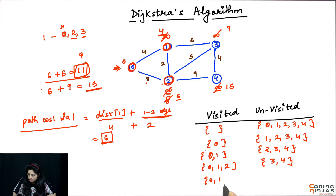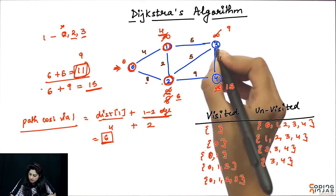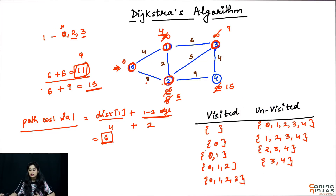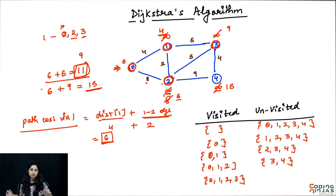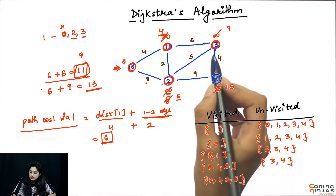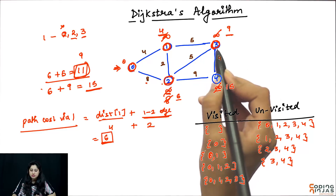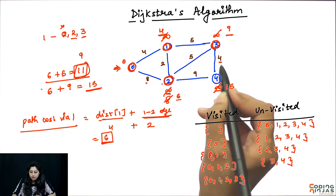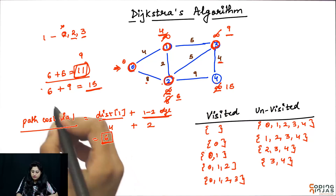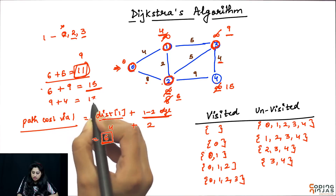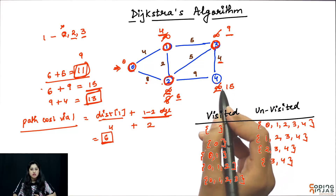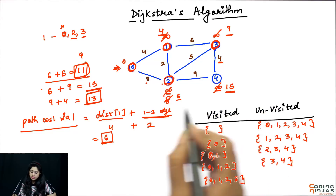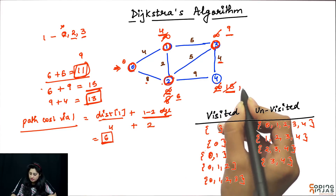Minimum is three. Tho zero, one, two, three — three ko visited mark kar denge. Three visited ho chuka hai. Three ke unvisited neighbors ko explore karenge — three ke unvisited neighbor ek hi hai bas, and that is four. Agar hum three ke through four tak reach karte hai, tho us path ki cost: three tak paunchne ki cost kya hai — nine. Three se four waali edge ki cost four, tho three se four total jane ki cost will be nine plus four, and that is thirteen. Pehle hum fifteen mein pahunch rahe the, thirteen is obviously better than fifteen, so hum update karte hain.